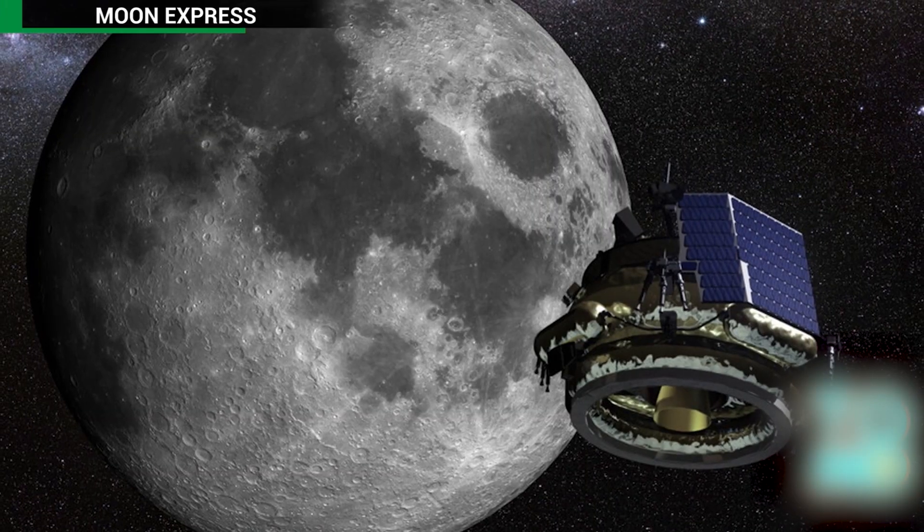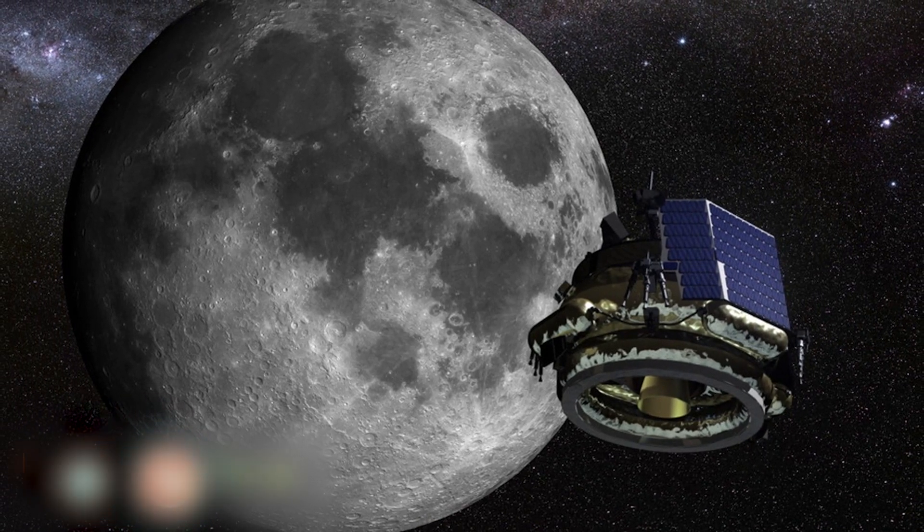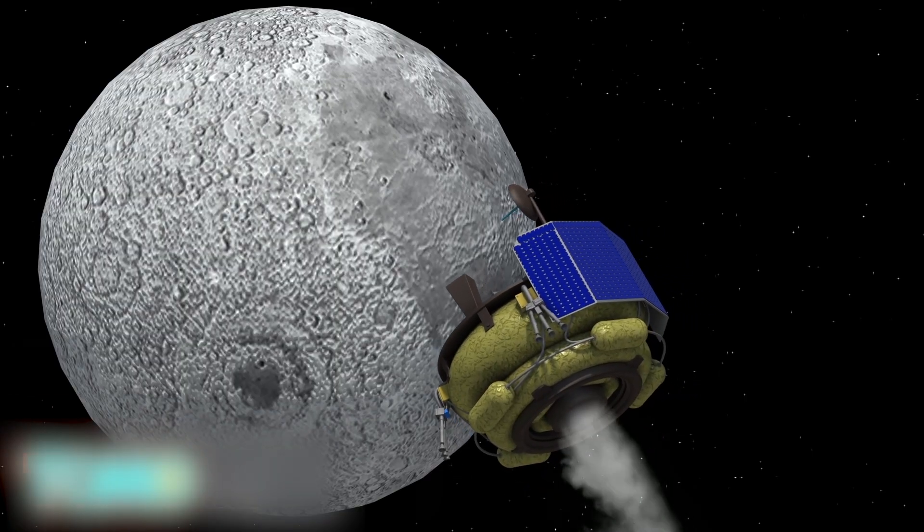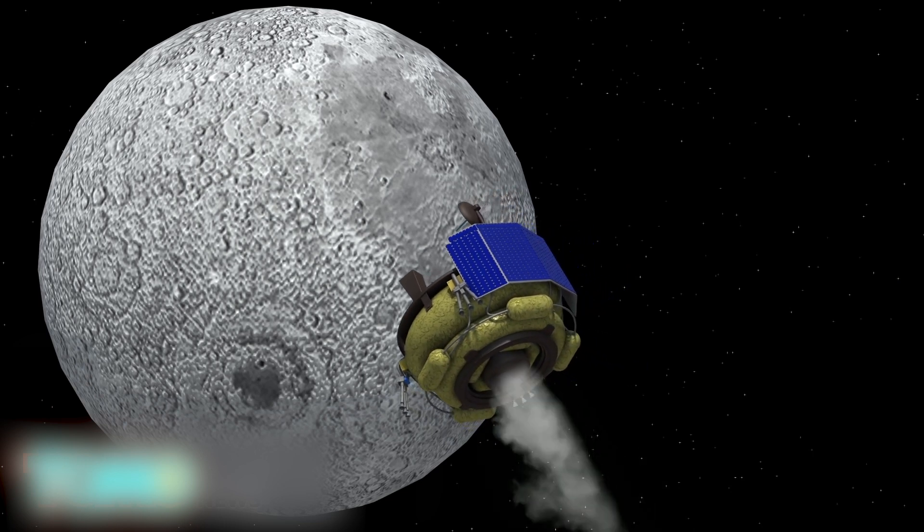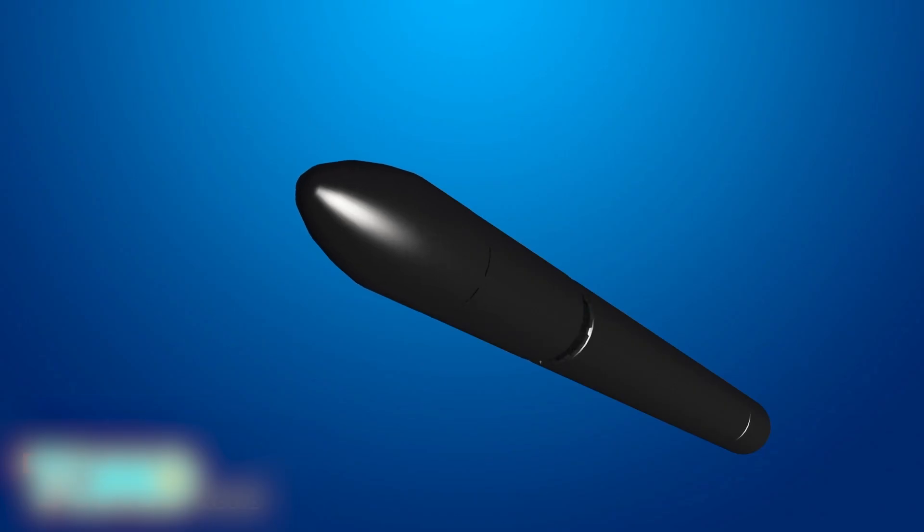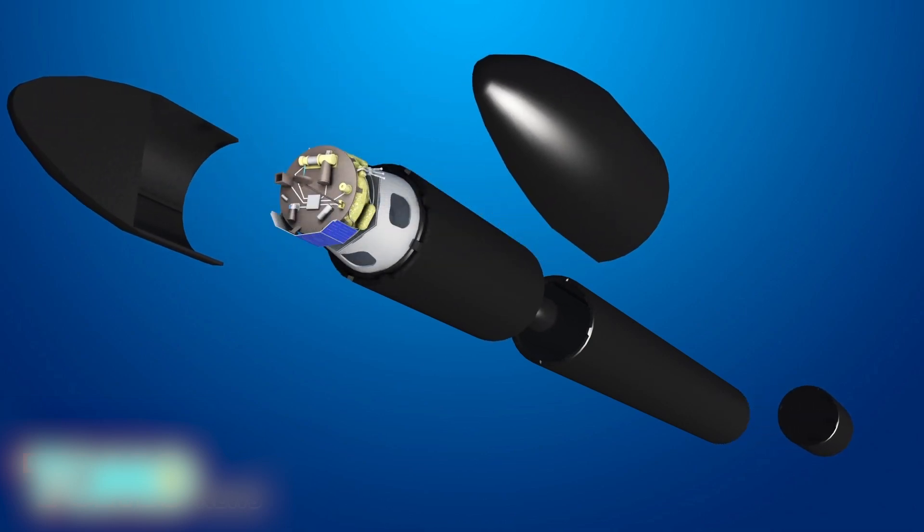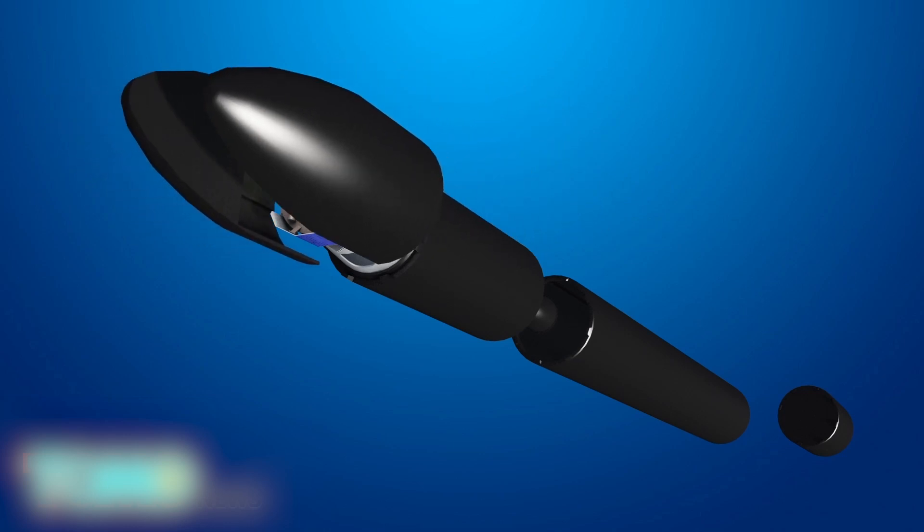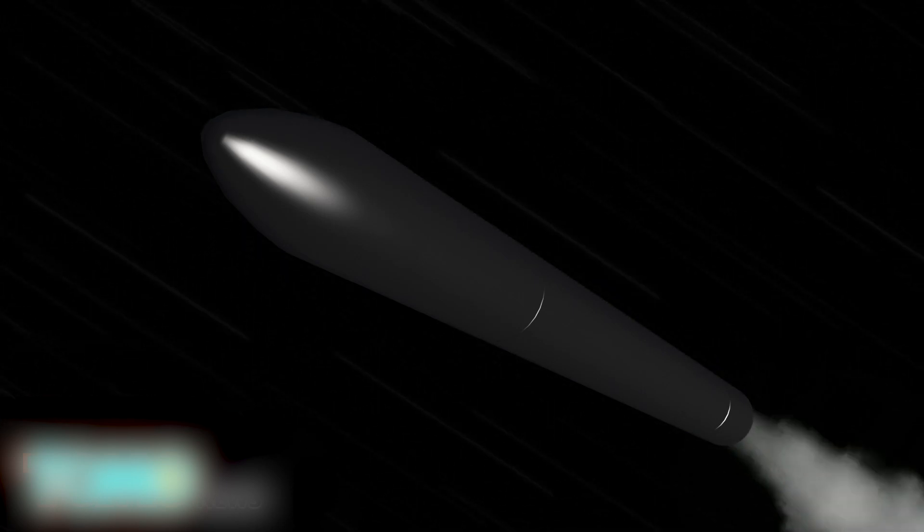A California space startup is set to gain government approval for the first private mission to the moon. California startup Moon Express is on the verge of U.S. approval to land on the moon in 2017. In October, the startup announced a deal with Rocket Lab USA for multiple manned missions to the moon. Their MX-1 Lander spacecraft will travel aboard Rocket Lab's 52.5-foot-tall Electron rocket for testing.